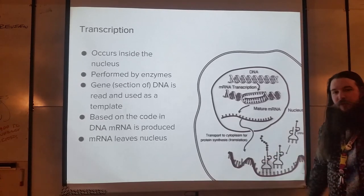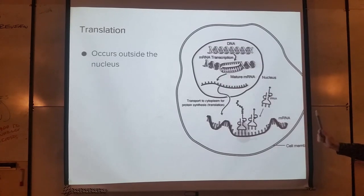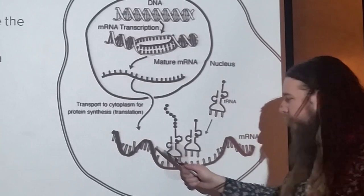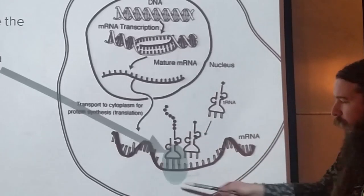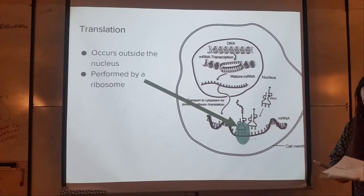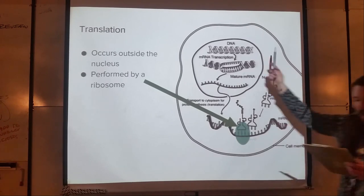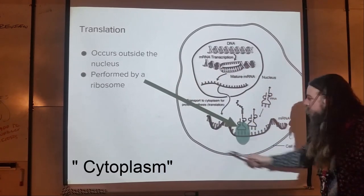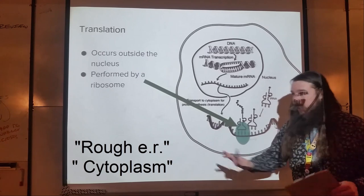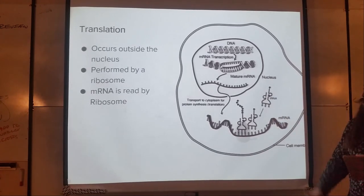The mRNA leaves the nucleus just in time for translation. Translation occurs outside of the nucleus — either in the cytoplasm, which is what we're showing here, or on the rough ER, which also has ribosomes all over it. The process is performed by a ribosome — there it is, that little grayish circle — our friend the ribosome.